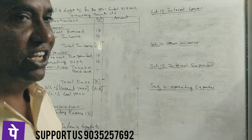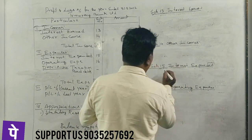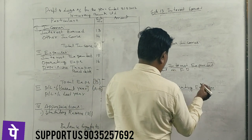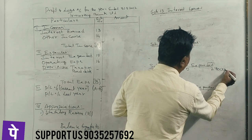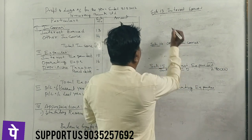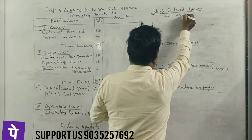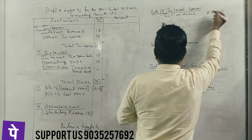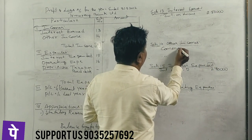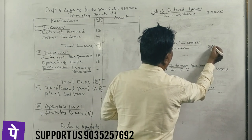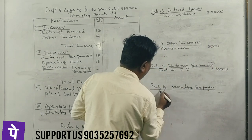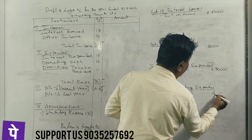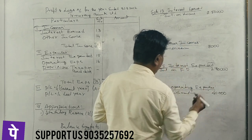So now let's do it on the board. First of all, interest on fixed deposit: $2,70,000. Next, interest on loans: $2,50,000. Commission charged to customers: $8,000. Establishment expenses: $40,000. Discount on bills discounted: $2,50,000.